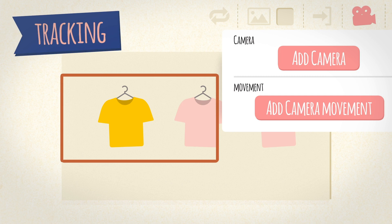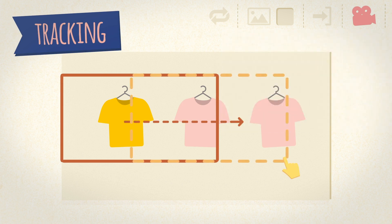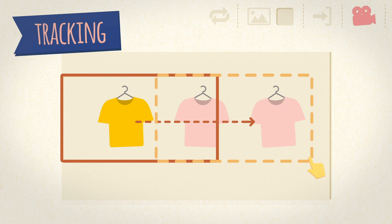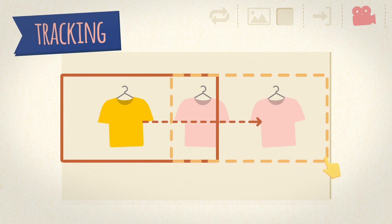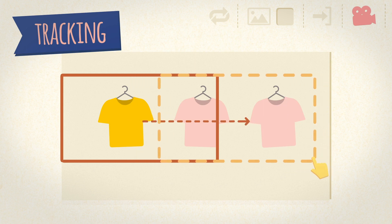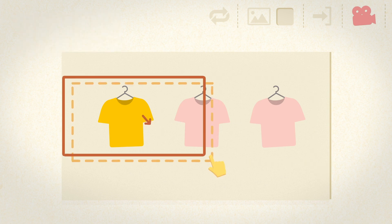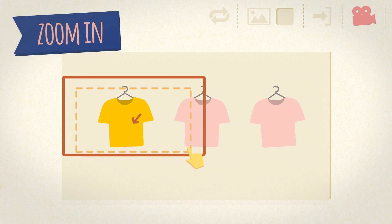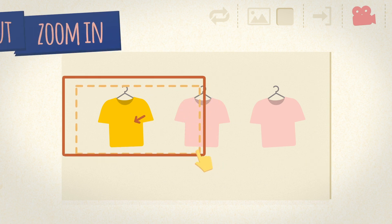When applying tracking, click on the Add Camera Movement button. Position the beginning location and the ending location by moving the rectangles around. By scaling the size of the rectangles, you can create zooming.